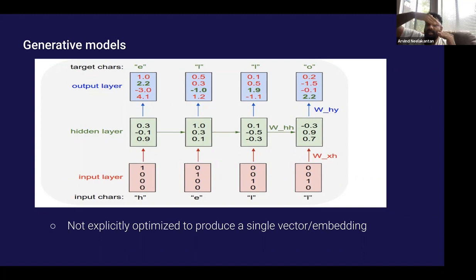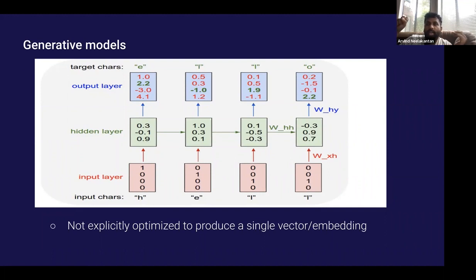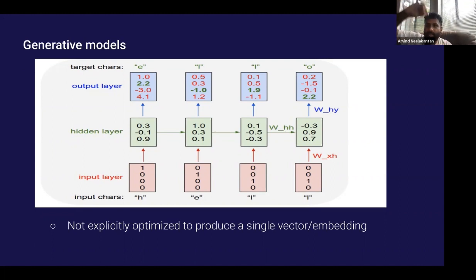These models are deep, meaning there are multiple layers of vector representations before the model predicts the output — this is a standard deep learning setup. The thing with generative models is that all the intermediate vector representations or embeddings are not explicitly optimized to produce a single vector that captures the whole input. Because the training objective is to predict the next character, there's not really a vector you can point to after training and say this has the most information about the input.